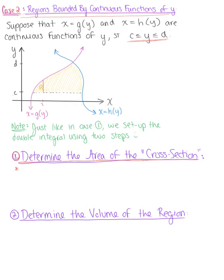Let's try integrating this using the same technique as Case 1. Drawing a vertical cross section at some arbitrary x-naught, we see the upper bound is g of y and the bottom is y equals c. But if we move the cross section to x-sub-1, the top curve changes to h of y while the bottom remains y equals c. So integrating in the order dy dx would require the sum of two double integrals, which is doable but unnecessarily complex. So we want to avoid this by taking a cross section parallel to the x-axis instead.